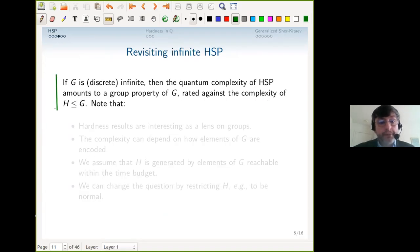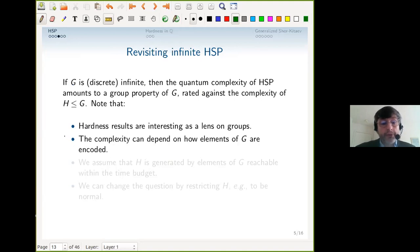Here's our agenda. We can take a single infinite group G, then there's an infinite family of possibilities, and we rate the performance against the complexity of describing H. The smaller a subgroup H is, the more complicated its generators will be. Since it's a question separately about each group, it's a lens on groups.